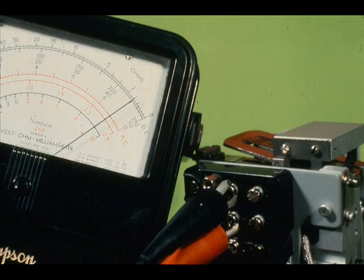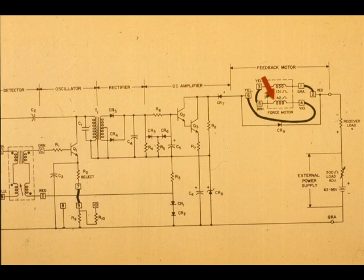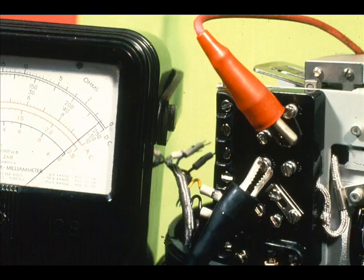The same technique is applied to checking the feedback motor. We can see here that with the links disconnected, the resistance between 1 and 3 should be 131 ohms. This one checks out okay. The resistance between 4 and 5 should be 42 ohms. This one measures approximately 42 ohms.